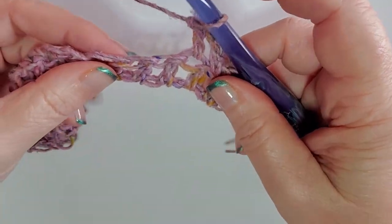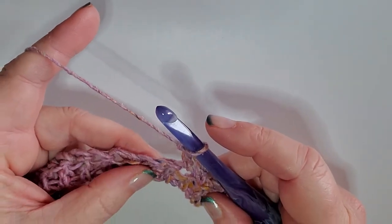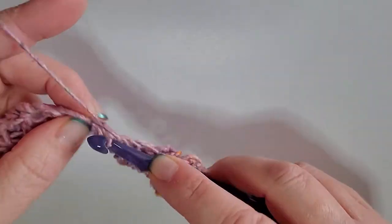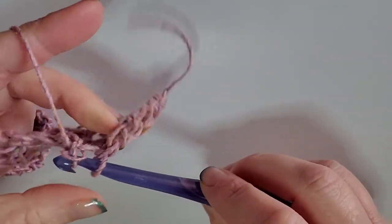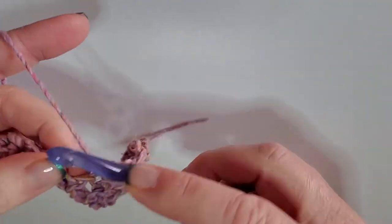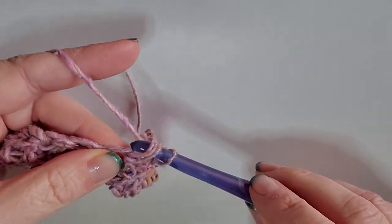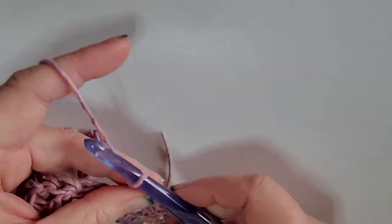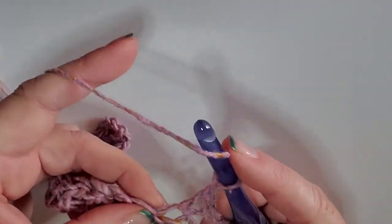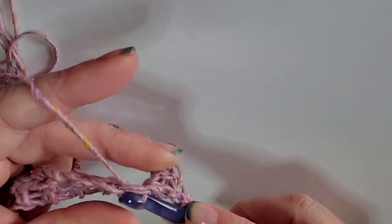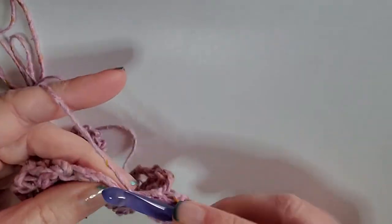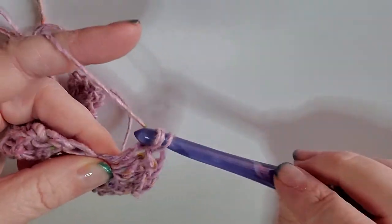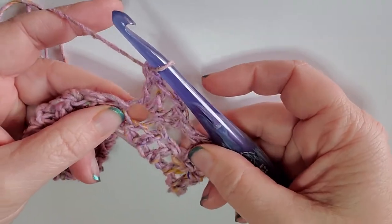Now we are going to skip two. Skip, skip. In that next stitch goes two double crochets. Now everything that I'm talking about right now all goes in the same stitch. So there's two double crochets, now we're going to do a chain one, and then two more double crochets all in the same spot.